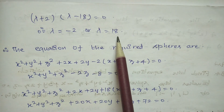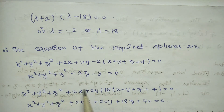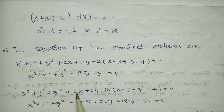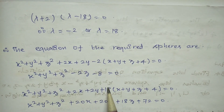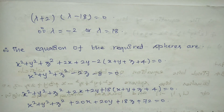For λ = 18, substituting into S + λP = 0: x² + y² + z² + 2x + 2y + 18(x + y + z + 4) = 0. Simplifying: 2x + 18x = 20x, 2y + 18y = 20y, and 18z. So the second sphere equation is x² + y² + z² + 20x + 20y + 18z + 72 = 0. These are the two required sphere equations. Thank you all.